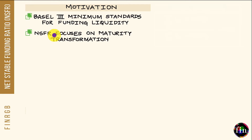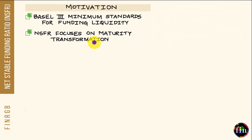Out of these two ratios, the NSFR and the LCR, it is the NSFR which focuses on what's called Maturity Transformation — the transformation of short-term liabilities to long-term assets. Maturity Transformation is a fundamental constituent of the role that banks play in the overall economy.